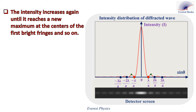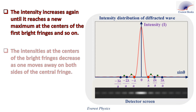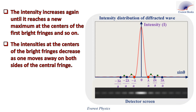Look at the two green points. They represent the centers of the first bright fringes on both sides of the central fringe. Look at these two points — they represent the centers of the second bright fringes on both sides of the central fringe. What do we conclude? The intensities at the centers of the bright fringes decrease as one moves away on both sides of the central fringe.